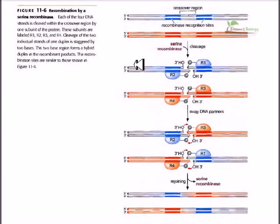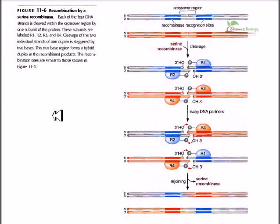In this video tutorial we are going to learn about recombination by serine recombinases. Serine recombinases are important proteins necessary for the site-specific recombination process. Serine has a side chain of CH2OH with an OH group at its R group position. The oxygen of this hydroxyl group can serve as a nucleophile and attack the phosphate or alpha phosphate groups.